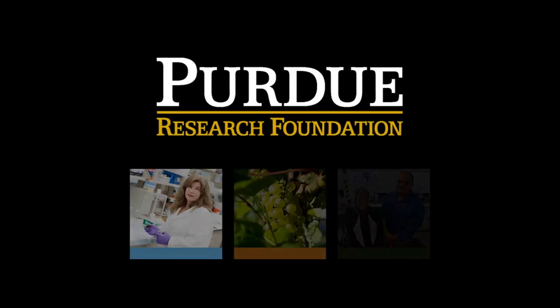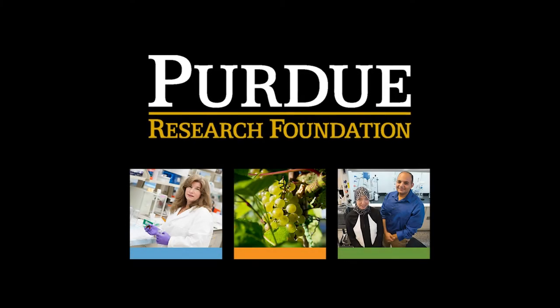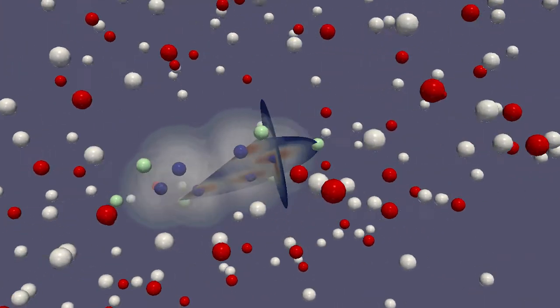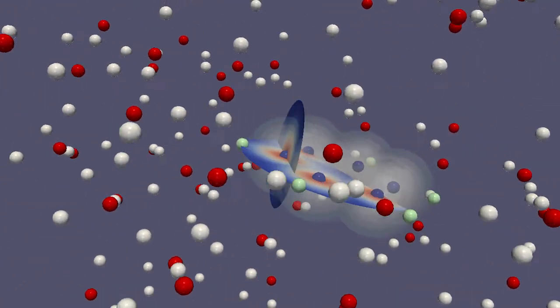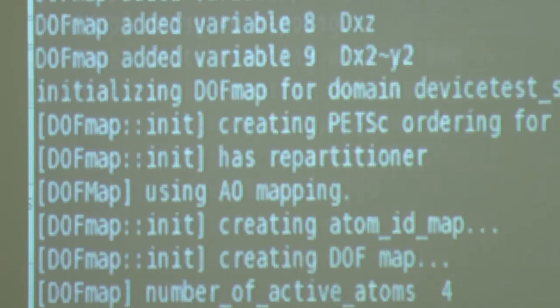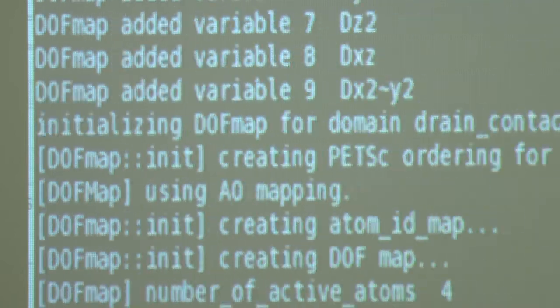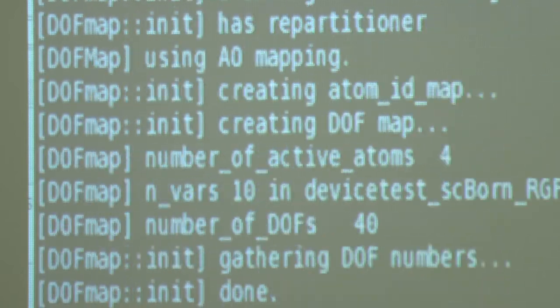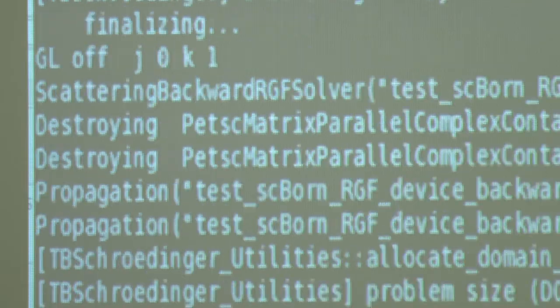Purdue University is an international leader in technology transfer and startup creation. One of those startups is Quail Modeling, which is developing a way to reduce drug development costs and better predict drug effectiveness by more accurately and efficiently modeling molecules and chemical reactions in liquid solutions.